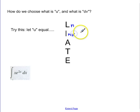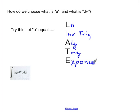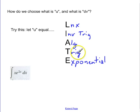Then we're going to do inverse trig functions if one of those is in there. Then we'll do an algebraic function, like x to the fifth or 5x cubed. Next we would choose a trig function, and last we would choose an exponential. So when you're trying to decide what to let u equal, go down this list: always go for natural log of x first. If there isn't one, look for an inverse trig, then algebraic, then trig, then exponential.